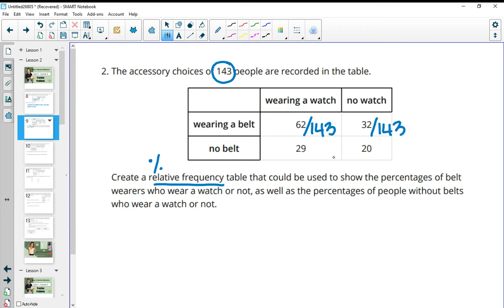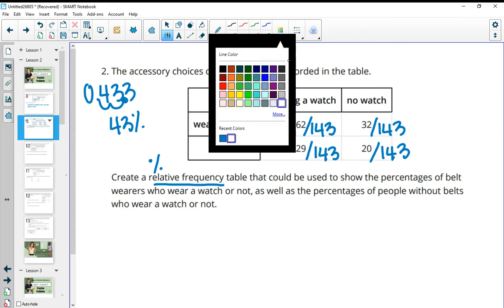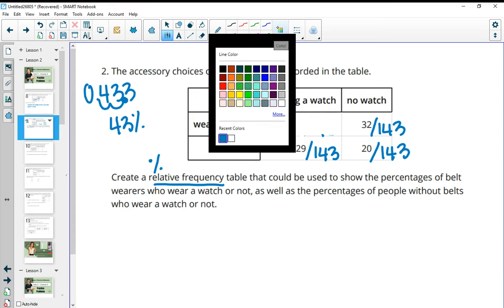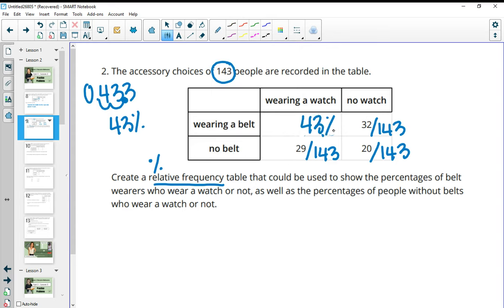So we're going to take 62 divided by 143, 32 divided by 143, 29 divided by 143, and then that's going to help us to write these as percents. So if you just take your calculator and do 62 divided by 143, that will give us 0.433. So as a percent, we just move the decimal two places and we'll just round it to the nearest percent. So this would be 43 for that one. And so what I'm going to do is just color over this box here and write in the 43 percent. So we have 43 for this one. Then do 32 divided by 143 and that one would give us 0.223. So again, we'll move the decimal place twice and we'll get 22 percent for that.